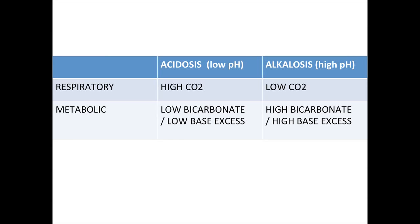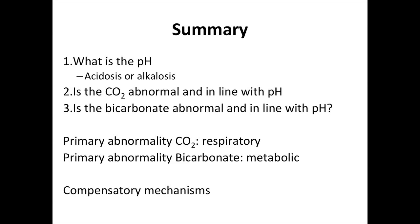This table summarises: high carbon dioxide in the respiratory system leads to acidosis; low carbon dioxide leads to alkaline. In the metabolic system, low bicarbonate leads to a low pH, and high bicarbonate leads to a high pH. Remember the three important questions: what is the pH — acid or alkaline? Is the carbon dioxide abnormal and in line with the pH? Is the bicarbonate abnormal and in line with the pH? If the primary abnormality is carbon dioxide, it is a respiratory problem; if bicarbonate, it is a metabolic problem. There are also compensatory mechanisms. Thank you very much.